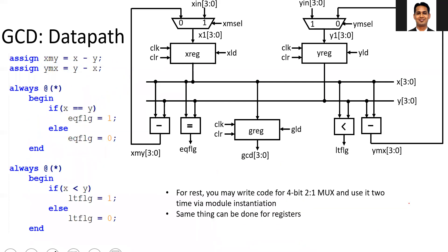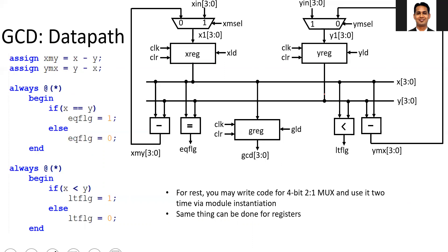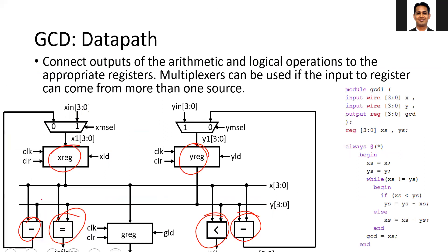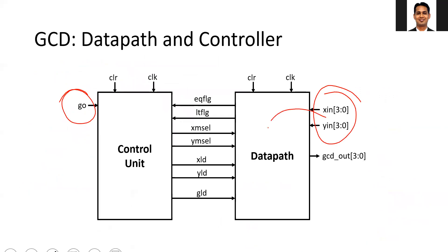The data path is the one who performs the operation on the data, while the control path decides at what time what operation is to be performed. For example, in the beginning, when the go signal is one, data X_in and Y_in will be loaded inside the data path. The controller will make xm_select equal to one and ym_select equal to one, then make x_load equal to one and y_load equal to one, so the values are stored in the registers. When go equals one, these values will be copied into the data path.